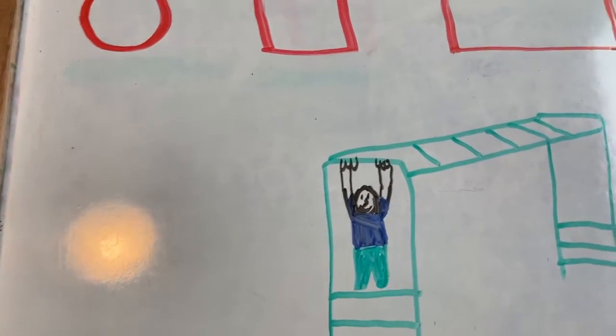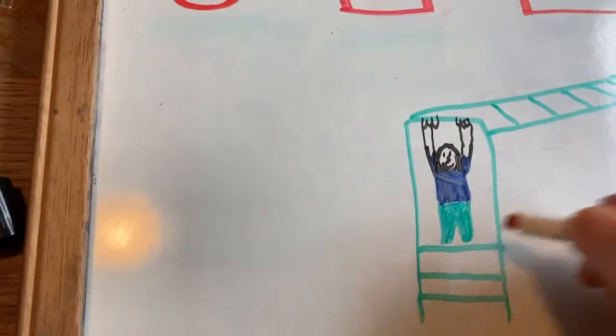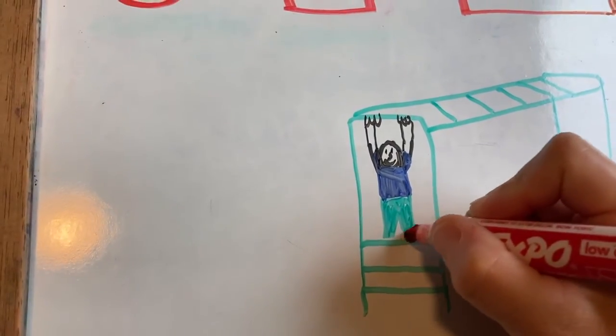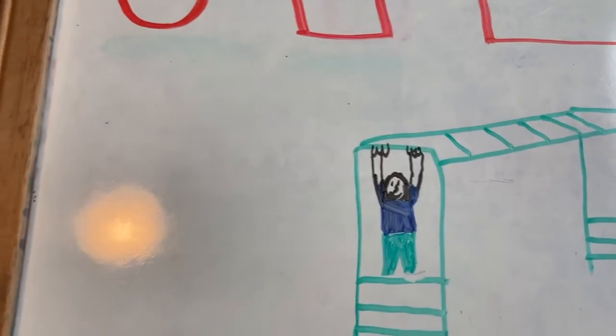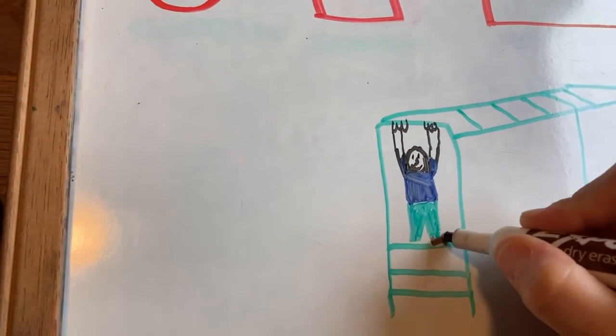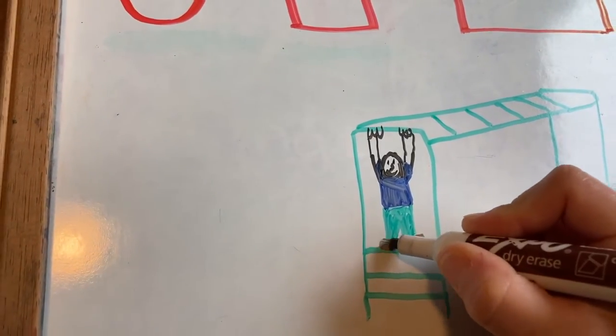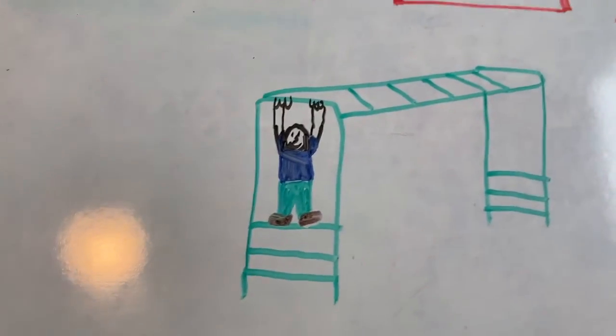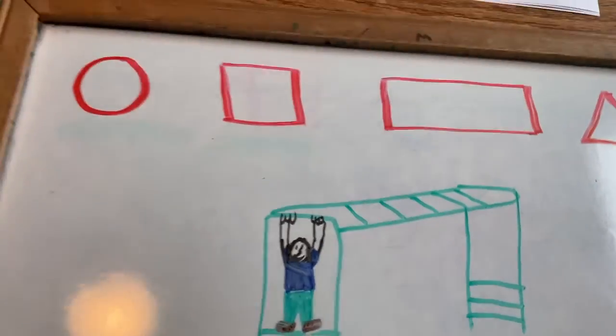And then I have shoes on because when we're at school, we always have to have our shoes on. This marker doesn't work. Say I wear brown shoes. All right, that one was really fast and easy and fun.